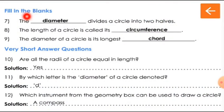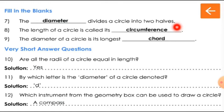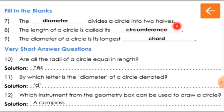Now fill in the blanks. Question number 7: The dash divides a circle into two halves. What divides a circle into two halves? The diameter. The diameter is the line segment drawn from one edge of the circle to the other edge passing through the center. Diameter divides a circle into two halves.